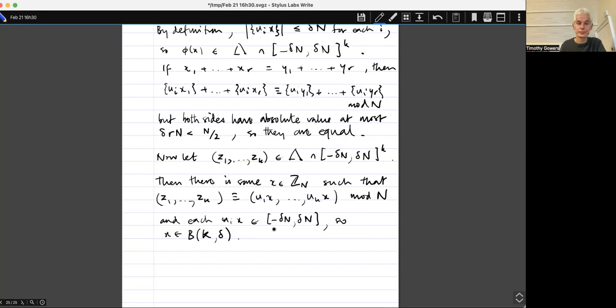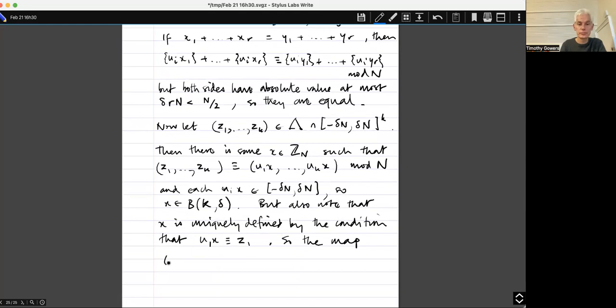And now we can, so that's how I should prove that our map is a surjection. But also note that x is uniquely defined by the condition that ui x is congruent to z1 because ui is non-zero. Sorry, u1x, I mean, because u1 is non-zero. So the map z1 up to zk maps to u1 to the minus 1 z1 inverts phi.